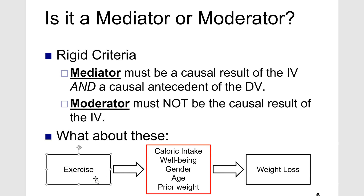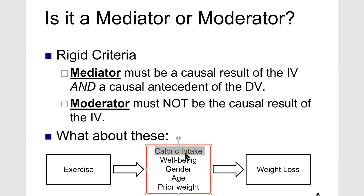We're going to say that exercise leads to weight loss. Let's take a look at all five of these and figure out if they're a mediator or a moderator. Exercise leads to weight loss because of caloric intake — could that be a mediator or a moderator? The question you have to ask is: does exercise have any direct impact on caloric intake, i.e. how much you eat? The answer is yes. The more you exercise, the hungrier you're going to be, and so the more you're probably going to eat. And so caloric intake must be a mediator.